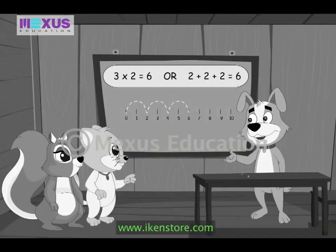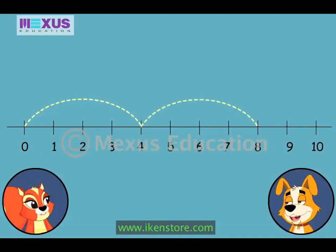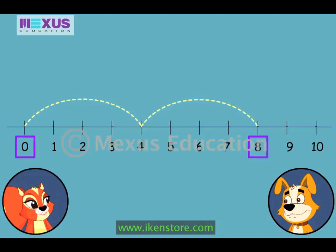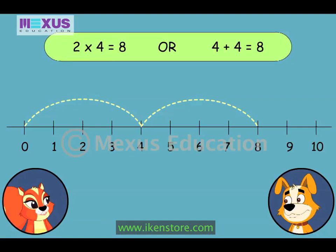Now it's your turn, Amber. This arc has jumped from 0 to 4. This arc has jumped from 4 to 8. Amber, what is the multiplication fact for this number line? The two arcs have jumped from 0 to 8 in 2 steps of 4 each, so 2 times 4 is equal to 8.